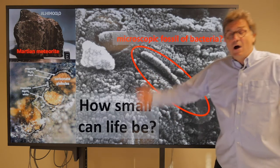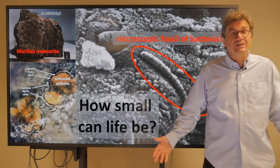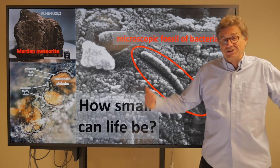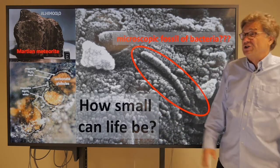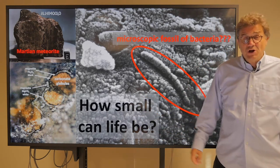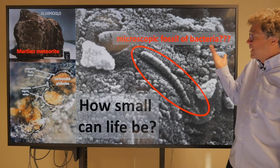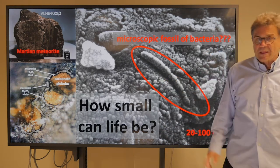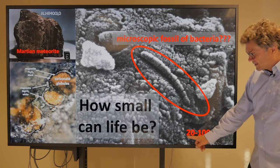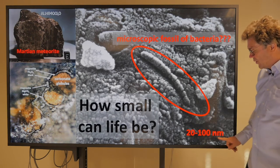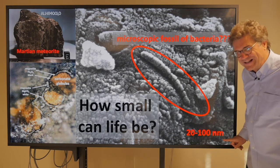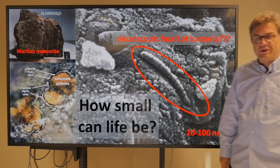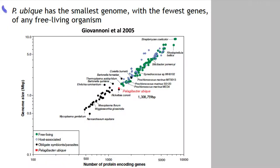The question is, how small can life be? This is important because if you're looking for life elsewhere in the universe, you're not going to find things necessarily the size of human beings or the size of whales. You might find things the size of bacteria or even smaller. In this size scale, we're talking about 20 to 100 nanometers — 10 to the minus 9 meters is the relevant unit.